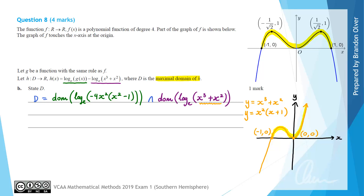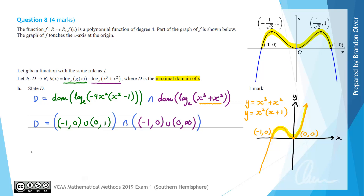Writing this down: the domain of log e of minus 4x squared(x squared minus 1) is the open interval (−1, 0) union (0, 1). The domain of log e of (x cubed plus x squared) is (−1, 0) union (0, +∞). The intersection of those two intervals is just the first interval. Therefore the domain d is x ∈ (−1, 0) ∪ (0, 1).